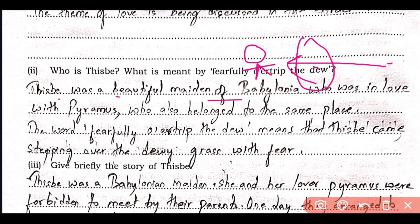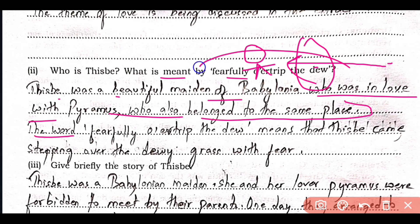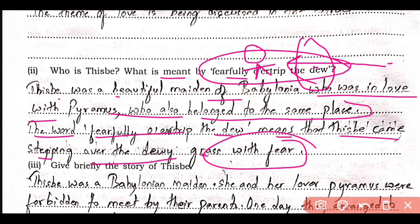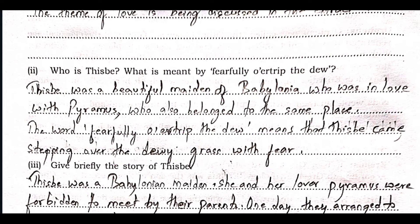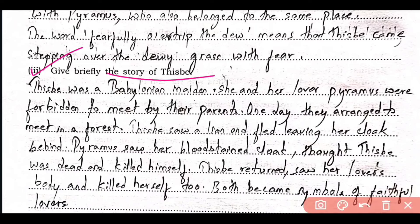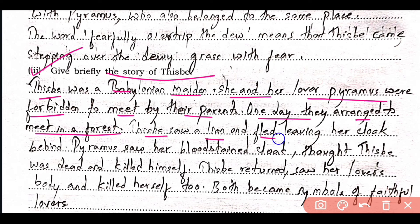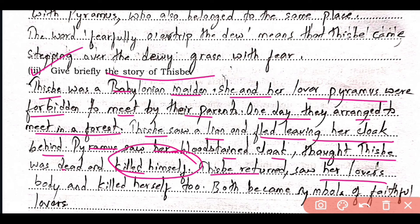So Thisbe was a beautiful maiden of Babylonia who was in love with Pyramus, who also belonged to the same place. The word 'fearfully overdrip the dew' means that Thisbe came stepping over the dewy grass with fear when she came to meet Pyramus in the jungle. The story of Thisbe: she was a Babylonian maiden, she and her lover Pyramus were forbidden to meet by their parents. One day they arranged to meet in a forest. Thisbe saw a lion and fled, leaving her cloak behind. Pyramus saw her blood-stained cloak, thought Thisbe was dead and killed himself. Later when Thisbe returned, she saw her lover's body and killed herself too, and both became the symbol of faithful lovers.